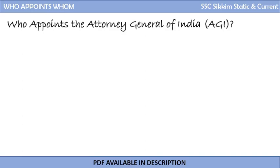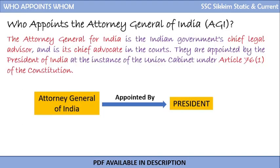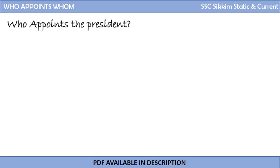Who appoints the Attorney General of India? Again, the Attorney General of India is appointed by the President. The Attorney General of India is the Indian government's chief legal advisor and chief advocate in the courts. They are appointed by the President at the instance of the Union Cabinet under Article 76(1) of the Constitution.